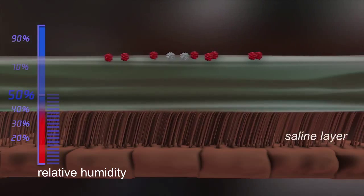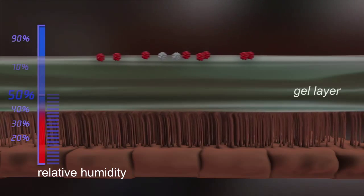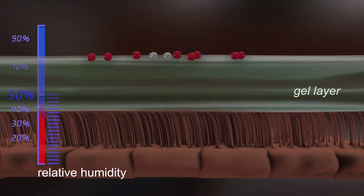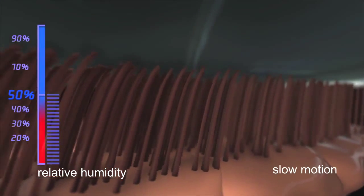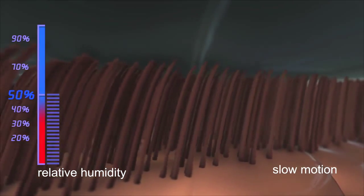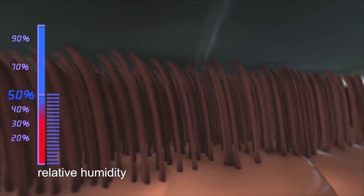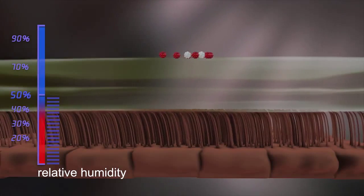Cilia are covered with a sticky, gel-like mucous layer that traps pathogens and airborne pollutants. The movement of the cilia transports the mucous to the larynx where, together with its cargo of pathogens, it can be swallowed or coughed up and thus rendered harmless.